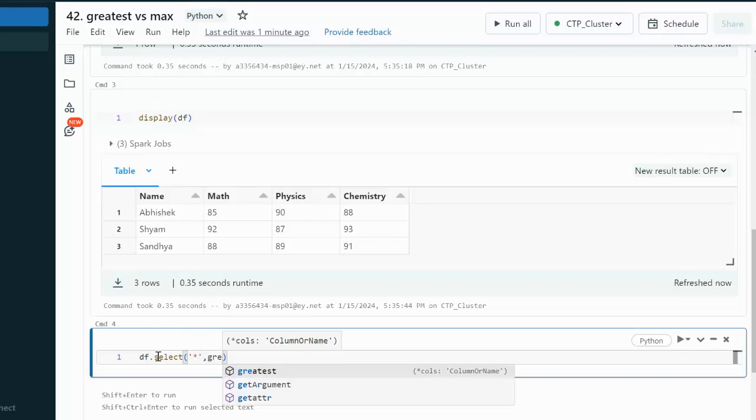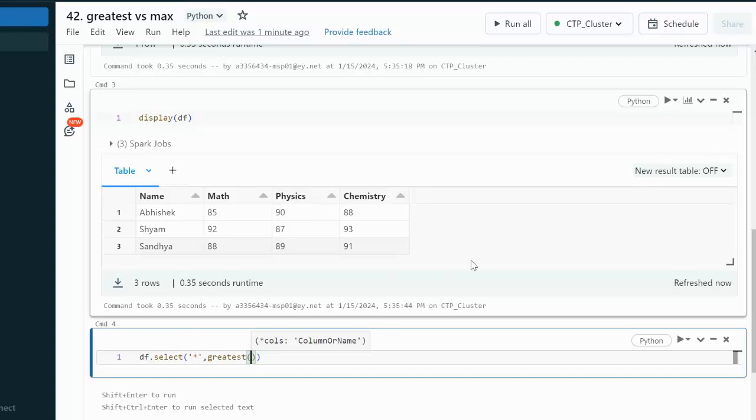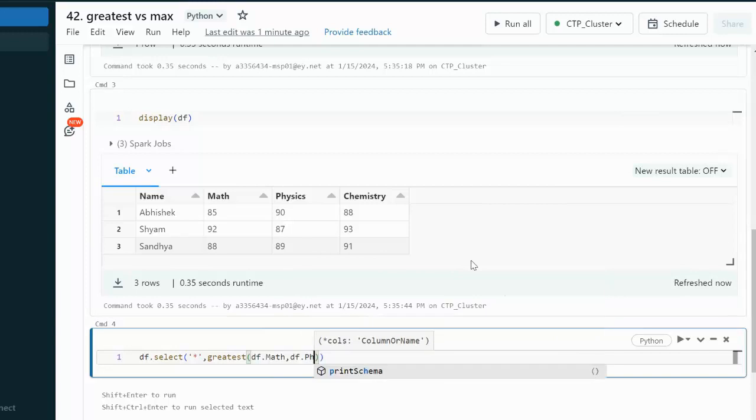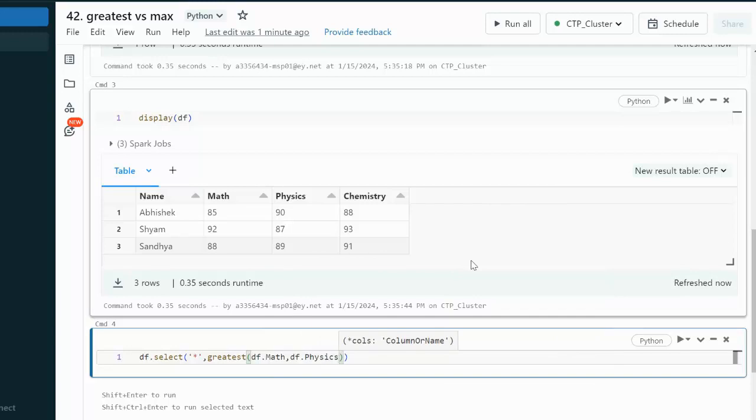Let me use the greatest function and inside the greatest function here we are required to specify the columns by which we need to check the maximum. The first column is Math, then the second column is Physics and third column is Chemistry.